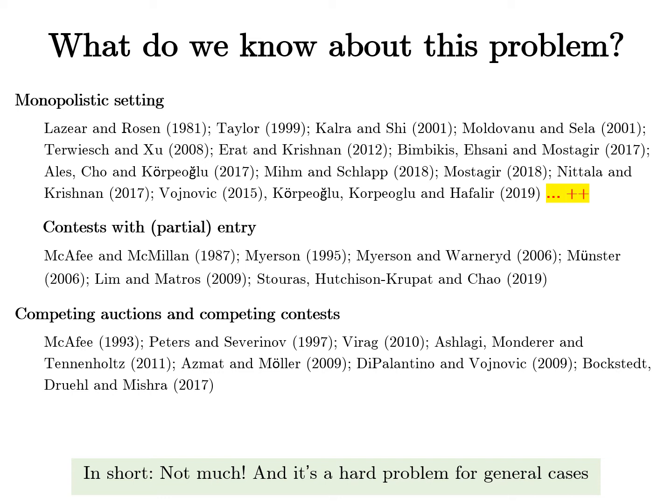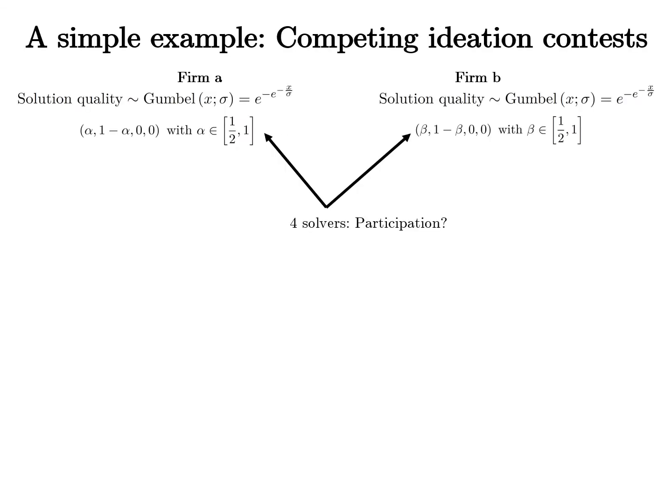Since it's a hard problem, we simplify it to the simplest non-trivial case on the solver side to derive insights on competition among firms. Consider this simple example: there is a crowdsourcing platform with two competing firms A and B. Suppose both firms have a one-dollar budget to organize a single-prize ideation contest. There is a population of four solvers who choose to submit a solution either to contest A or contest B with no other outside options.